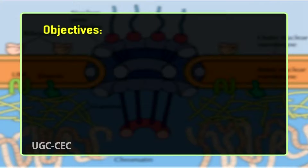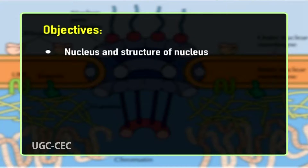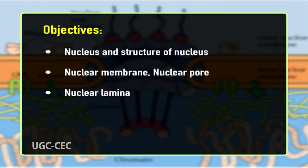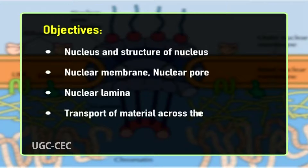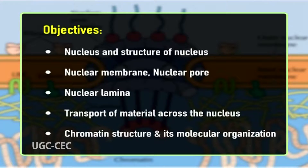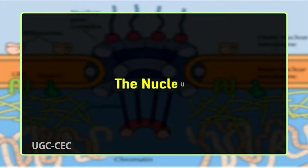Hello students and welcome to the lecture on nuclear lamina, transport across the nuclear envelope, and chromatin organization. The main objectives of today's lecture are to give a brief introduction of the nucleus and its structure, to explain the nuclear membrane and nuclear pore, to explain nuclear lamina in detail, to give a clear idea of transport of materials across the nucleus, and to explain chromatin structure and its molecular organization.